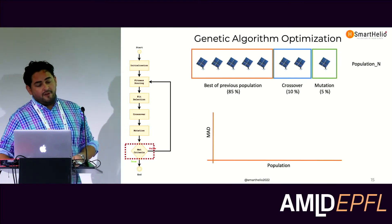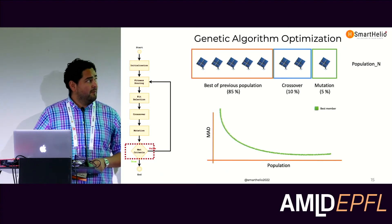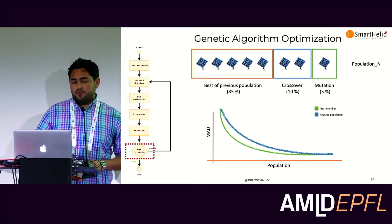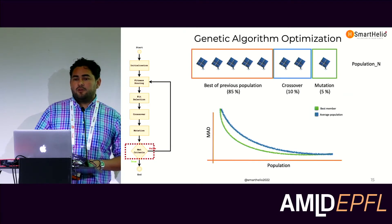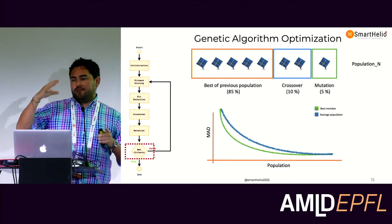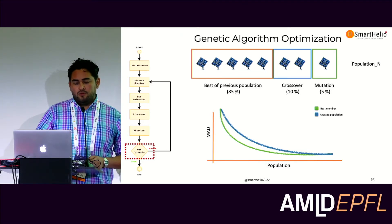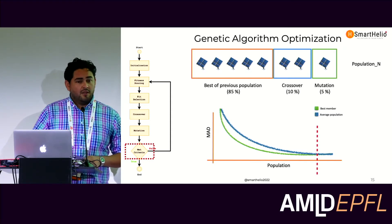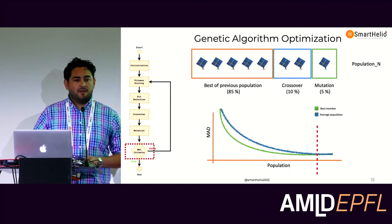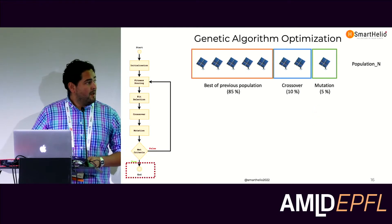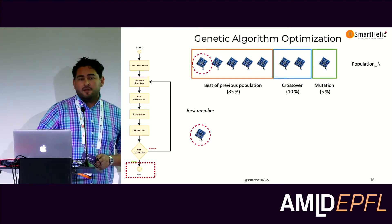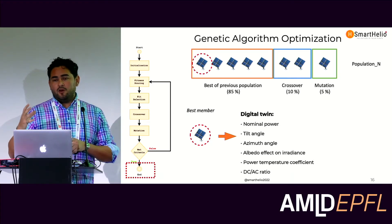What's the stopping criteria? We monitored two main things: the best member of the whole population across generations, and the average of the whole population. If you are trapped in a local minimum, the best member will keep improving but the whole population will not improve or may go backwards. That's why we selected these two metrics. When we see they are no longer improving after a certain number of evolutions, we consider that our best optimization. We then select the best member, which already has the six parameters, and create a digital twin of the actual system.